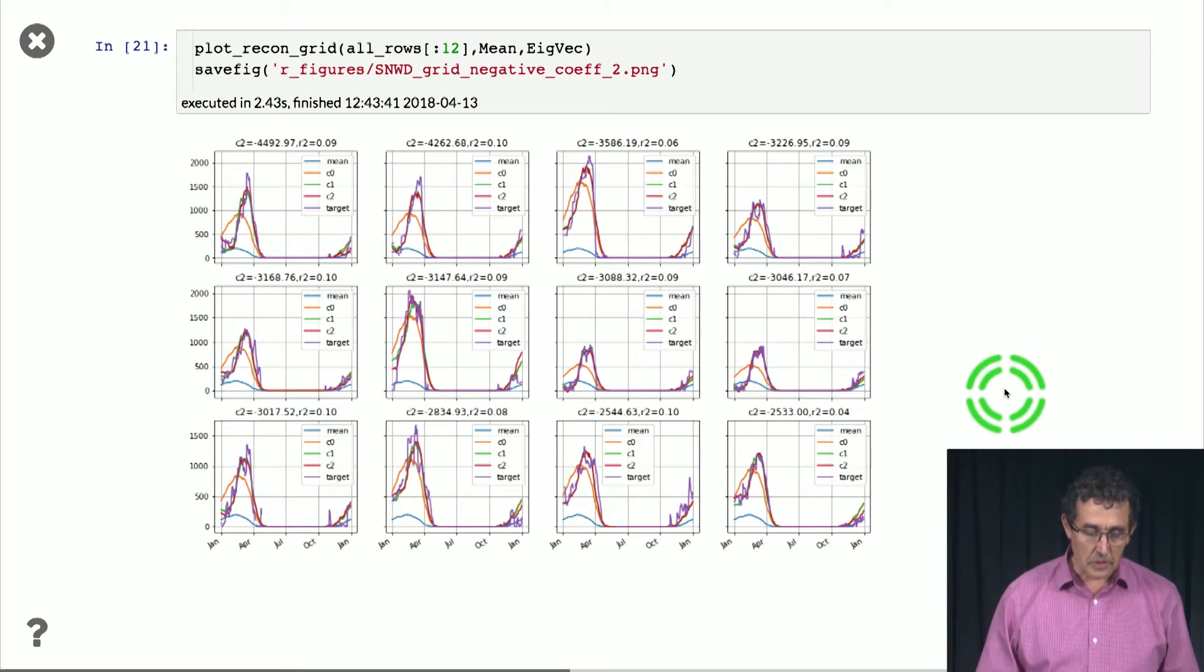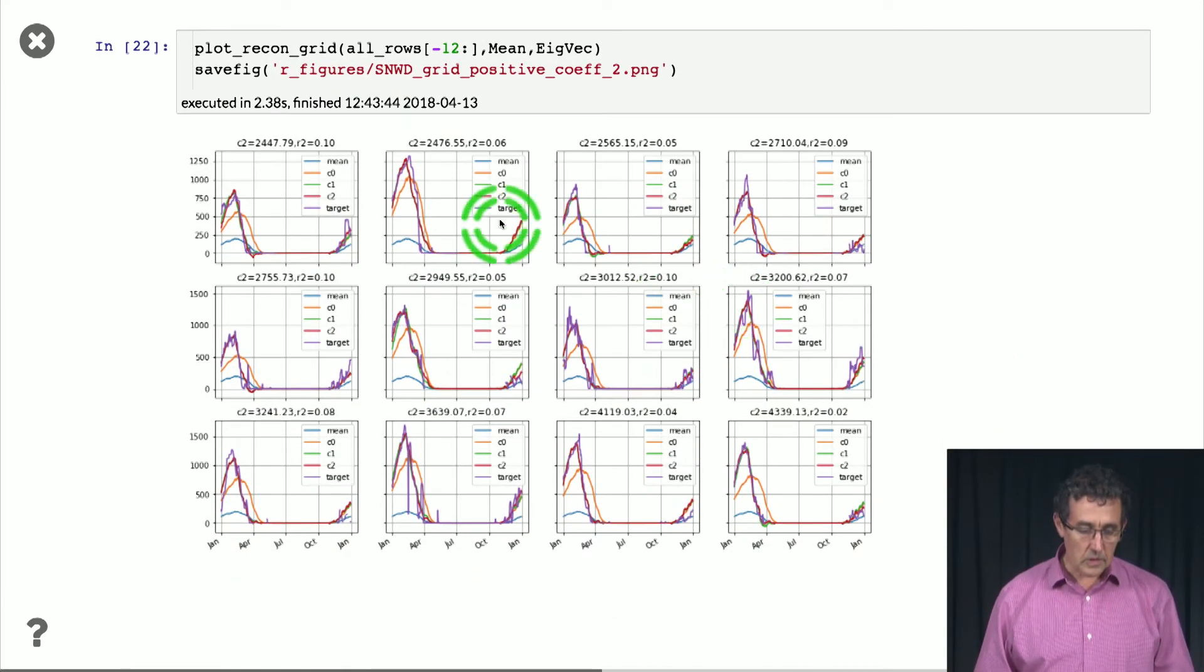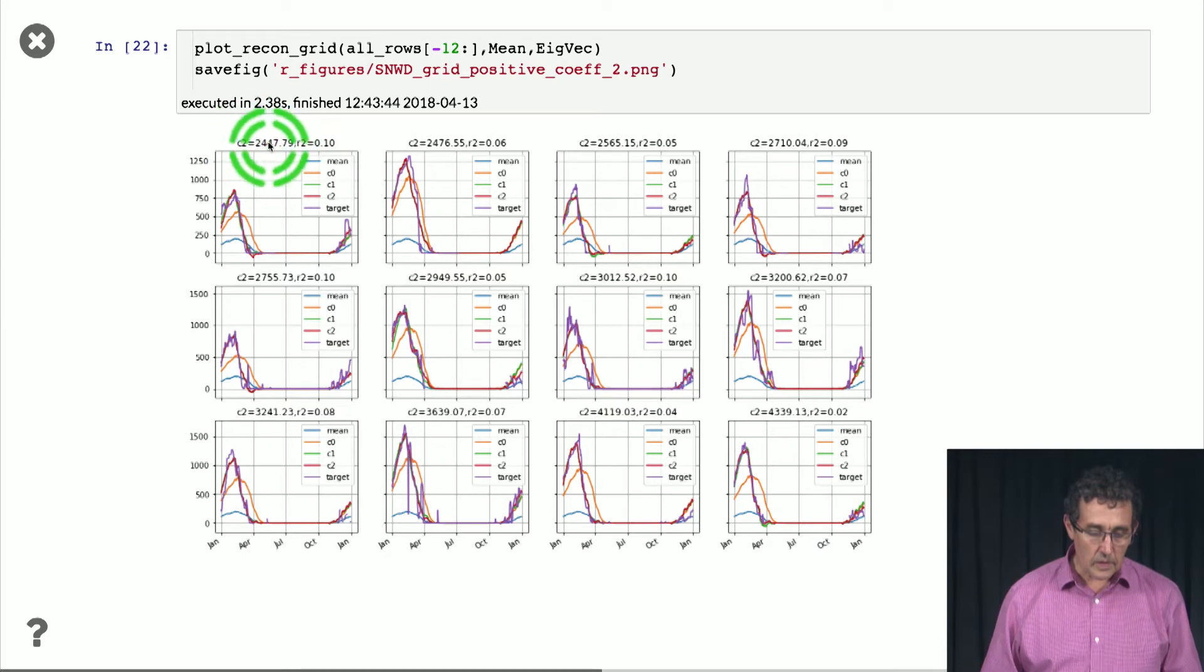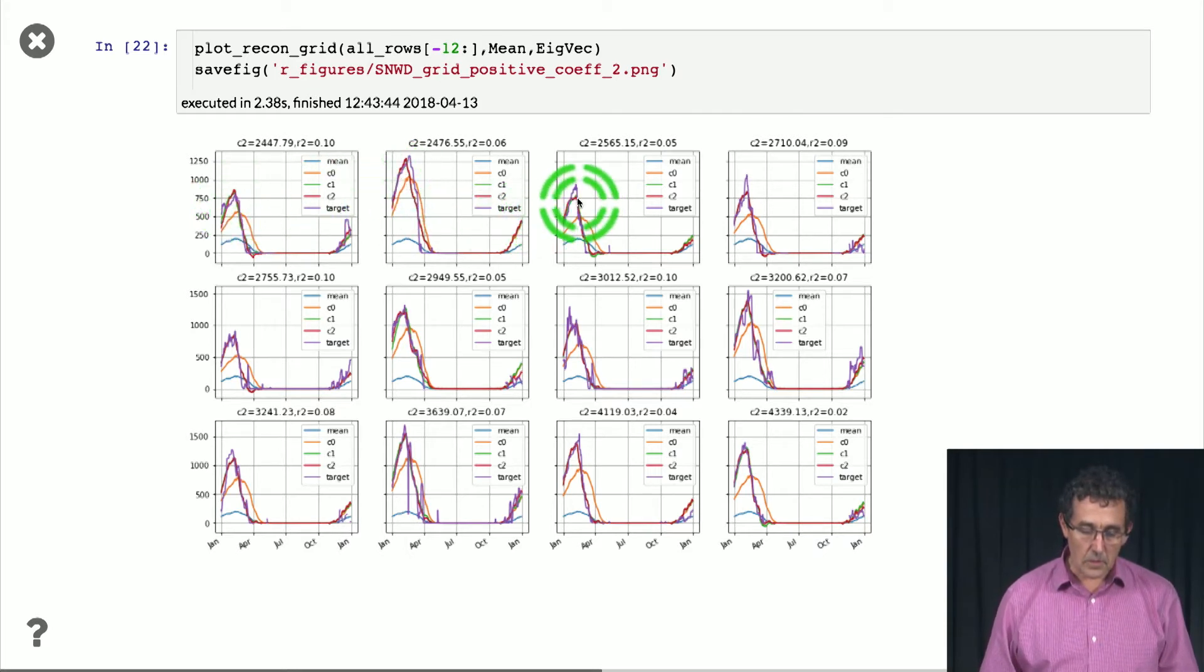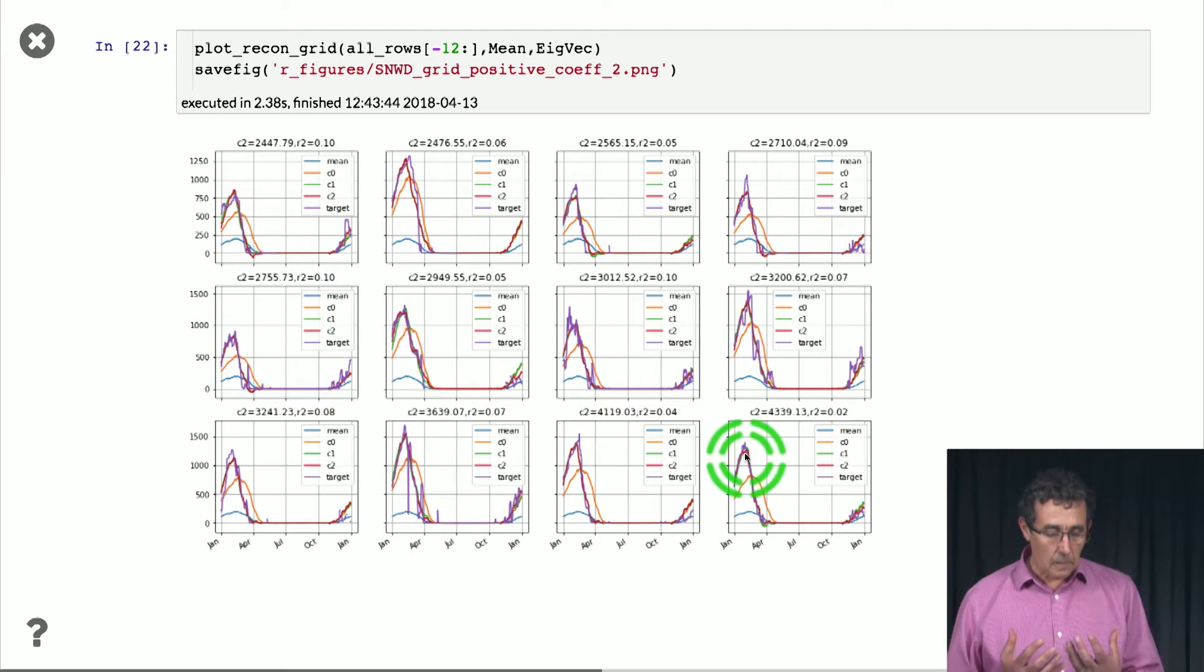Let's see the other extreme. So in the other extreme, this coefficient here, C2, is very large. That means that the season is early. And so if you see, if you look at these figures here, you see that indeed, the season is early in all of those. So that's the important thing. Basically, what we realize from this analysis is one of the important descriptors of how the snow depth behaves is whether it is an early season or a late season.